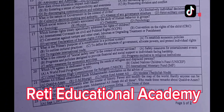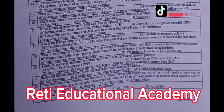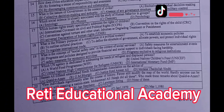Question number 17: Which human rights treaty specifically addresses the rights of children? A. International Convention on Civil and Political Rights. B. Convention on the Rights of the Child. C. Convention against Torture and Cruel, Inhuman or Degrading Treatment or Punishment. D. Universal Declaration of Human Rights. The correct answer is B: Convention on the Rights of the Child.